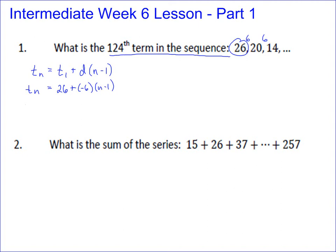We want to know the 124th term, so we want to know t_124. That's going to give me 26 plus negative 6 times 123. When you multiply that together, you get 26 plus a negative 738. So the answer is negative 712. So the 124th term of this sequence is negative 712.